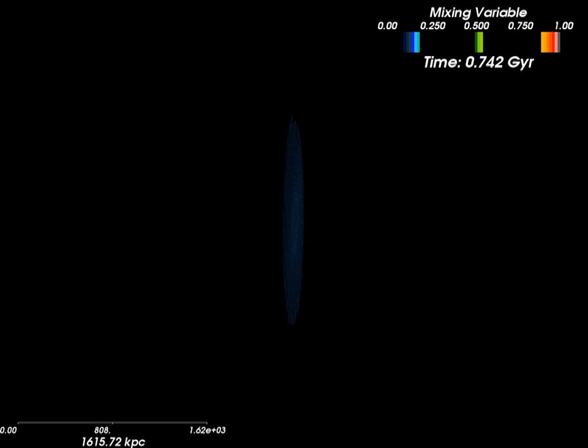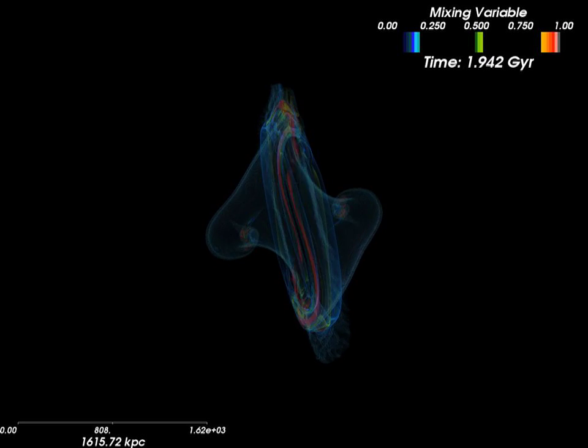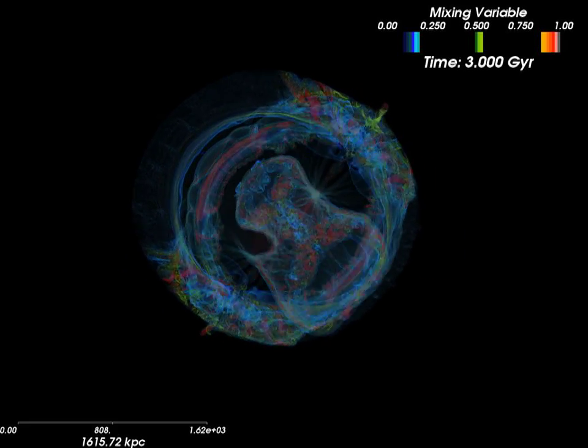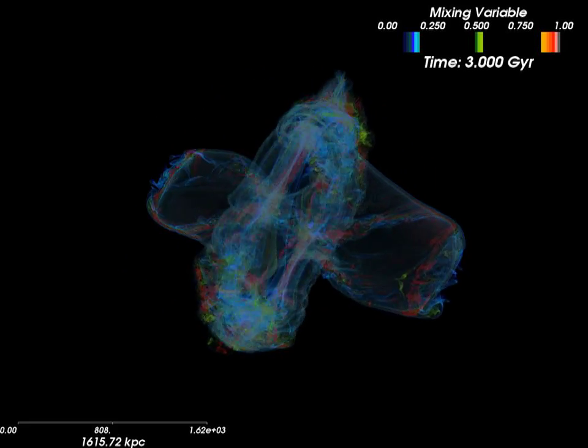The mixing variable M shows the degree to which the two cluster gases have mixed. Initially, there is only minor mixing along the boundary between the two cluster components.